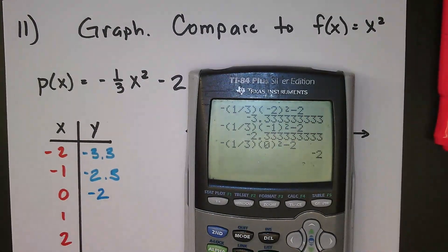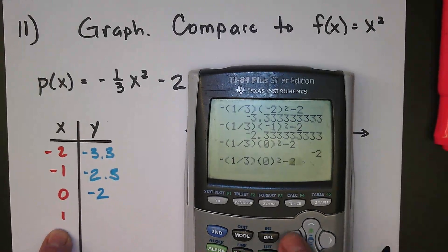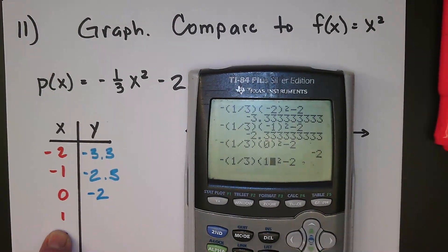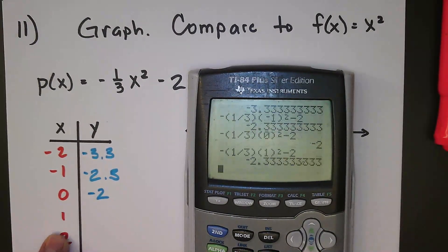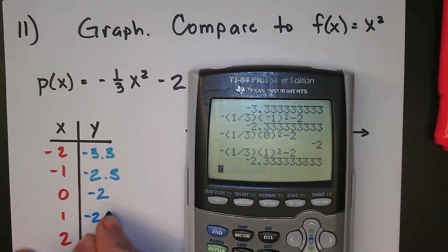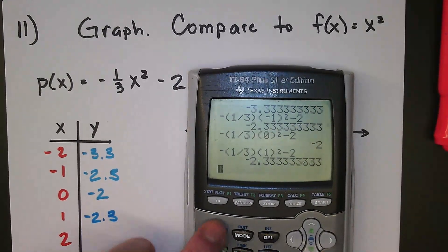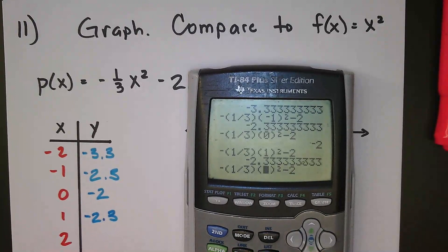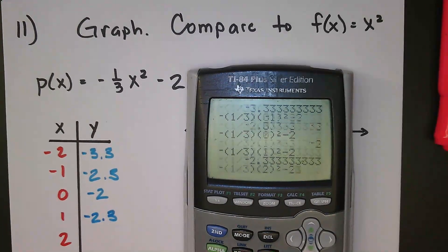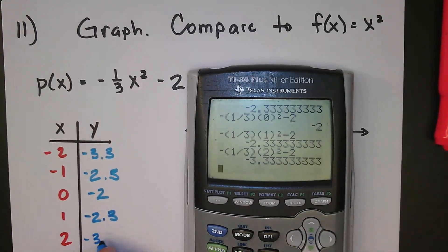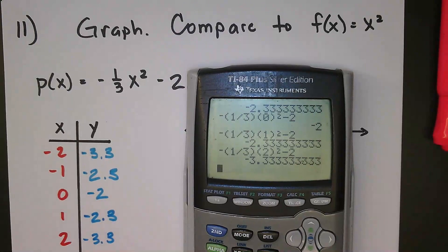Now I want to just input a 1, so I'll move to the left, over-type the 0, make it a 1. Negative 2.3. Now I'll input a 2, input a 2, negative 3.3, a 3 and a third.